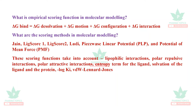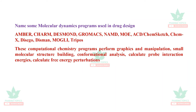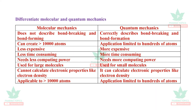Molecular dynamics programs include Amber, CHARMM, Desmond, GROMACS, NAMD, MOE, ChemSketch, MODELLER, and Tripos. Schrödinger is also used — it is a computational chemistry tool. These programs are used for molecular dynamics and free energy calculations.